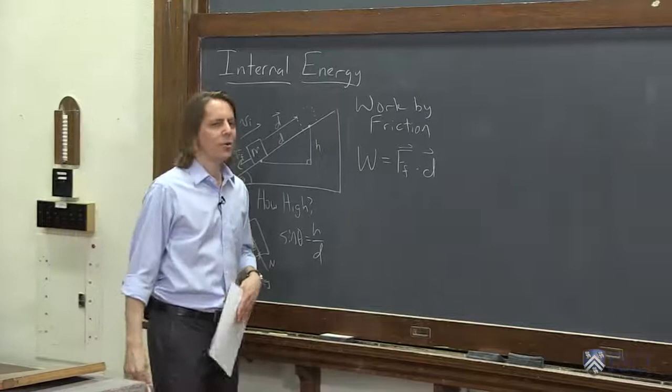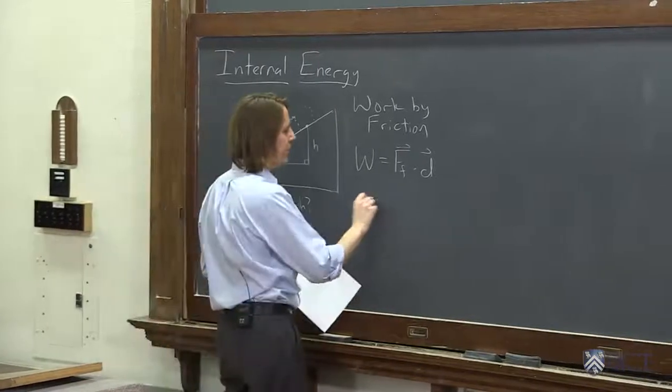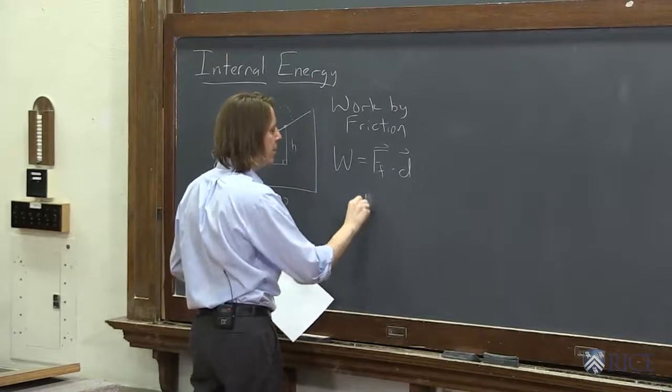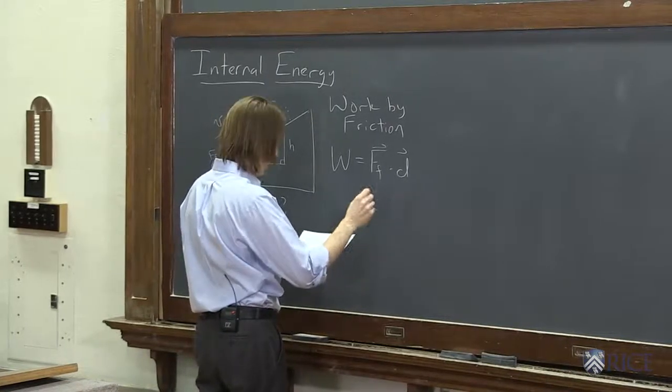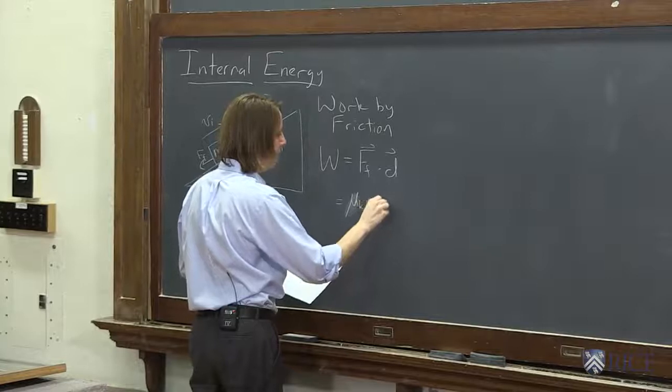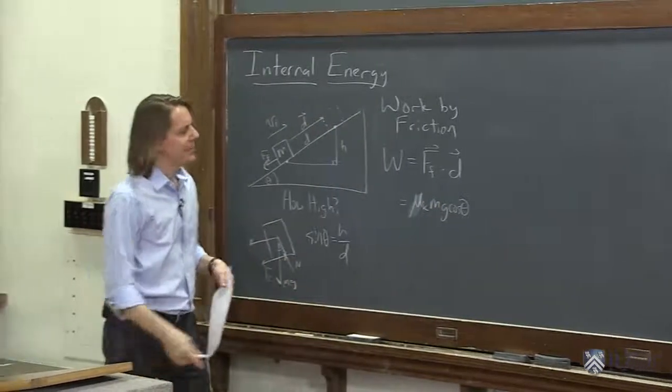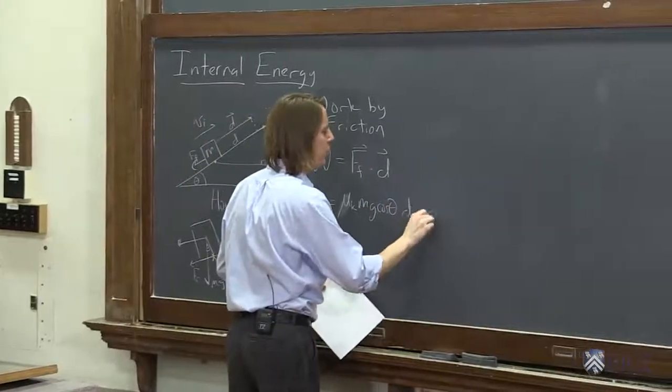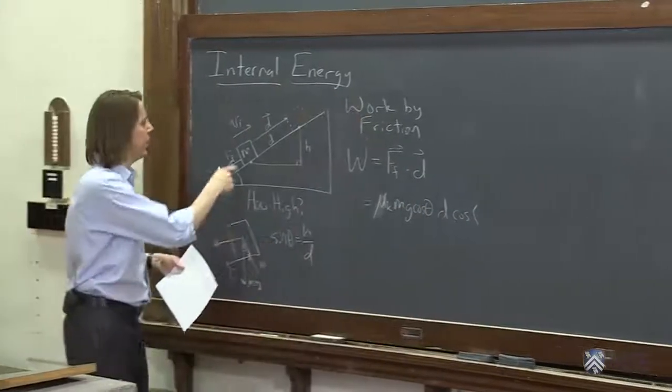So let's see. We know the magnitude of the friction force is mu k, the kinetic friction, mg cosine theta. And we know the magnitude of the d vector is d, little d. And the angle between them is 180 degrees.